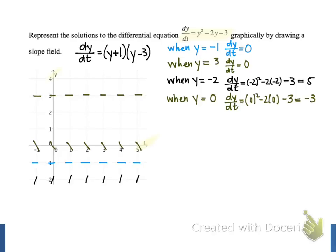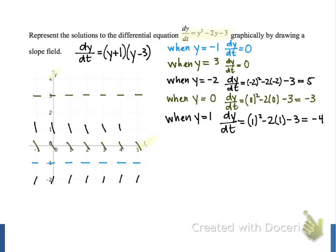Welcome back. Let's compare our results for the other three y values. When y is equal to 1, we evaluate 1 squared minus 2 times 1 minus 3, and our result is negative 4. So our tangent lines will be just a little bit steeper than the ones we drew previously — those black tangent lines that are pretty steep.